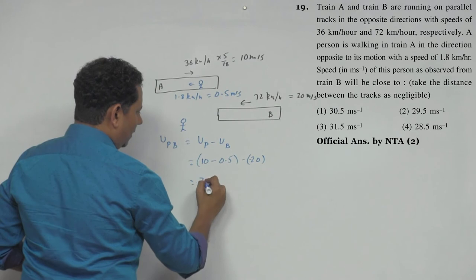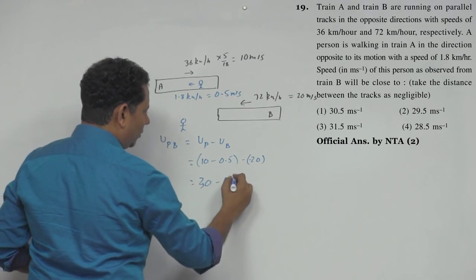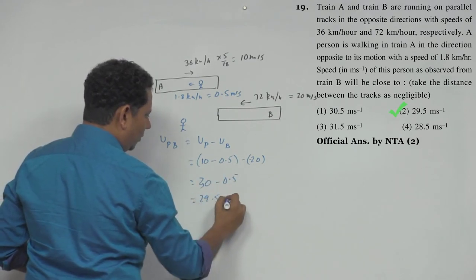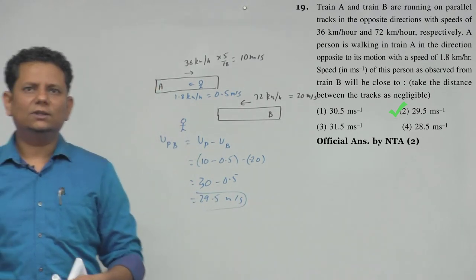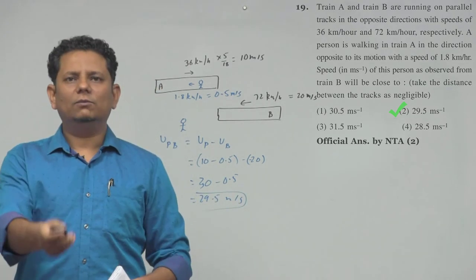So this will be 30 minus 0.5, which is 29.5 meter per second. This will be our final answer, so based on this we can say that option number 2 would be the correct choice.